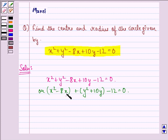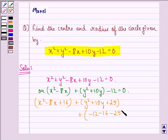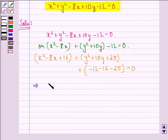Because if we add 16 to this bracket then this becomes x minus 4 the whole square. And if we add 25 to this bracket we get y plus 5 the whole square. Since we have added 16 and 25 here, so we need to subtract it also. So we can say that we have x squared minus 8x plus 16 plus y squared plus 10y plus 25 plus minus 12 minus 16 minus 25 equal to 0.